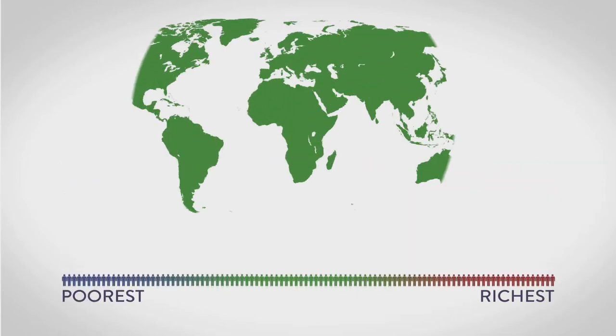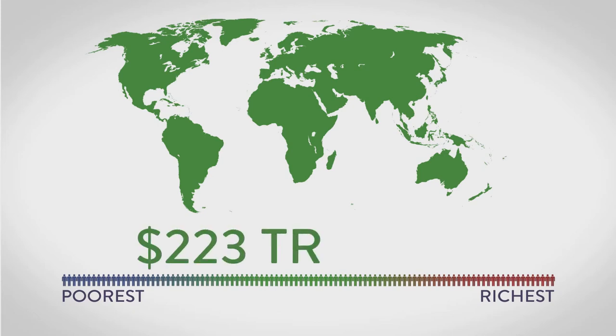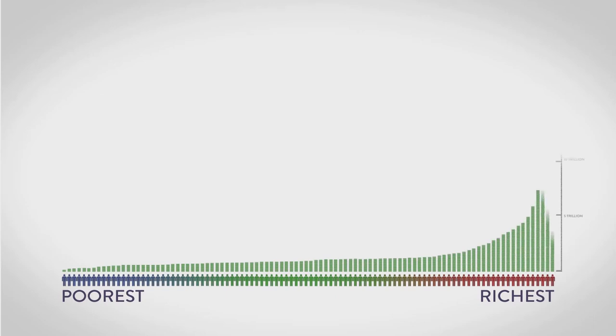Now let's show how the world's total wealth, roughly 223 trillion dollars, is distributed. The vast majority have practically nothing.